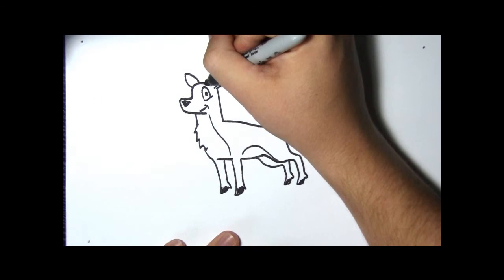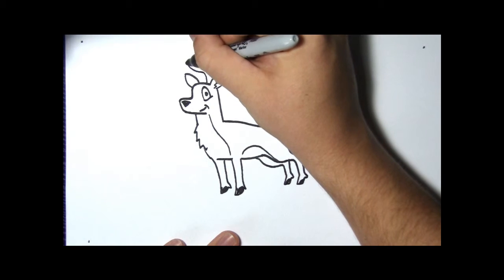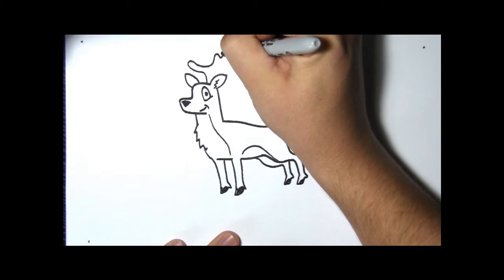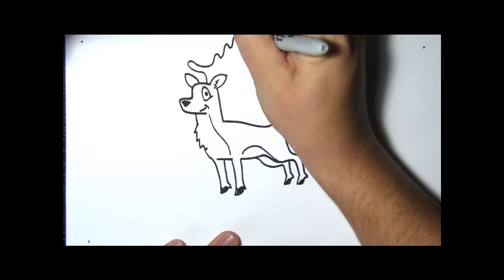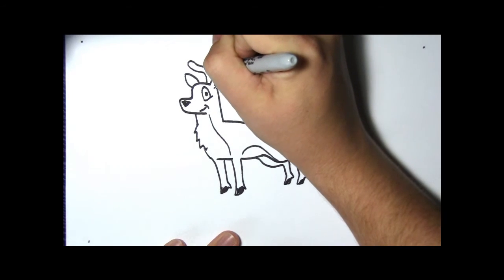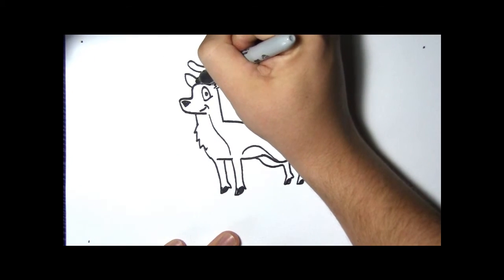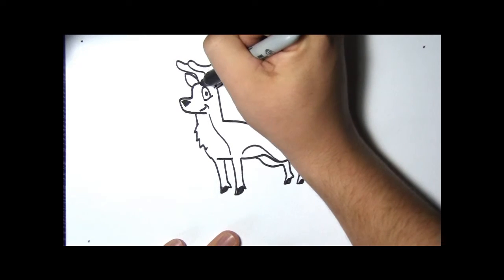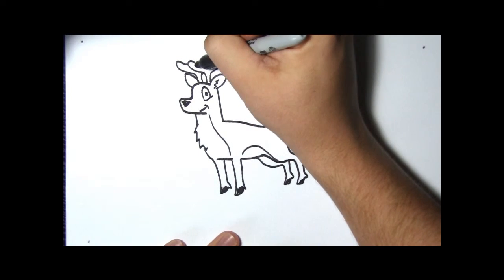Now we need to draw antlers. You can have as much fun as you want to drawing antlers. They have two sets, and most of the time they look like the other set.